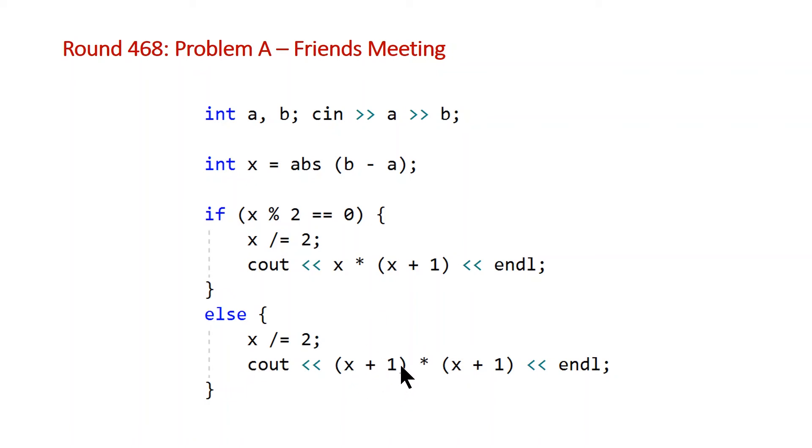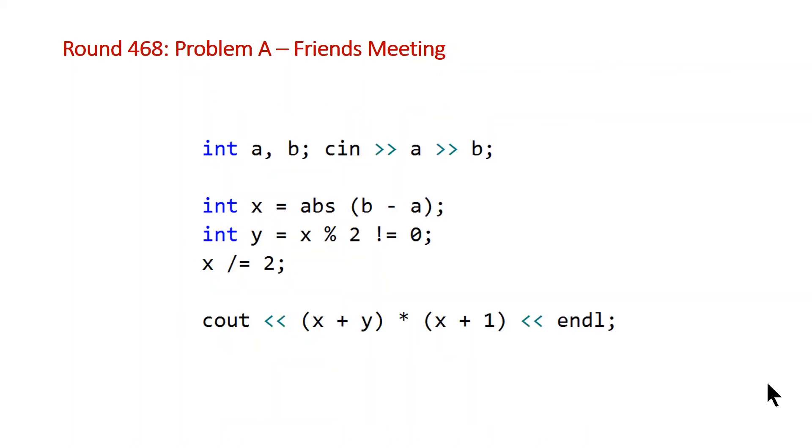So we can actually set a local variable, we'll call it y, and we'll just set it to be equal to 1 when x is odd and 0 otherwise. And then we can condense these seven lines into much fewer. So we've declared our local, we're going to set it to 1 when it's odd. So when the modulus 2 does not equal zero, that means it's odd. And then we can do our x divided by two to get the distance n. And then we can plug this in. So this will be our final code.